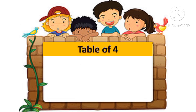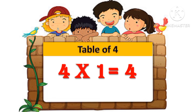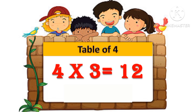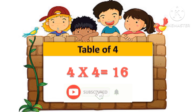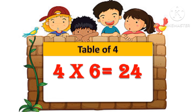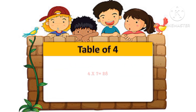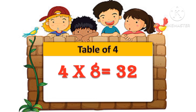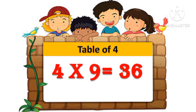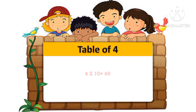Table of 4. 4 1s are 4. 4 2s are 8. 4 3s are 12. 4 4s are 16. 4 5s are 20. 4 6s are 24. 4 7s are 28. 4 8s are 32. 4 9s are 36. 4 10s are 40.